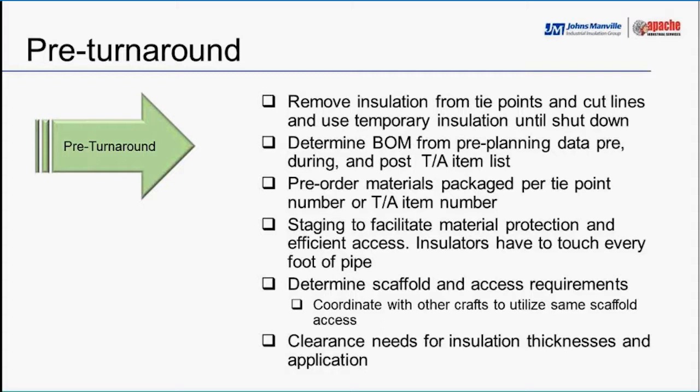Plan to share scaffolding across multiple crafts — insulation, painting — to only build one scaffold for everybody's multi-craft purposes. Figure five to seven percent extra material for contingencies, because once you start stripping a line you may find material that's been damaged and is crumbling off. During the pre-turnaround stage, you remove insulation from tie points, sometimes with temporary insulation allowed until shutdown occurs. You can determine the bill of materials from pre-planning data, pre-order materials packaged per item numbers, and stage them efficiently.